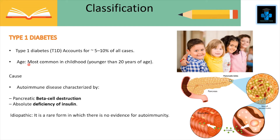Broadly there are two types: type 1 and type 2 diabetes. Type 1 diabetes accounts for approximately 5% to 10% of all cases and most commonly occurs in childhood, that is younger than 20 years of age. The cause is autoimmune disease characterized by pancreatic beta cell destruction leading to absolute insulin deficiency. There is also an idiopathic form, which is rare, with no evidence of autoimmunity.